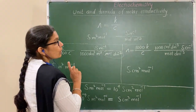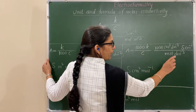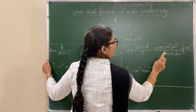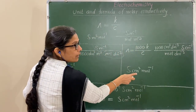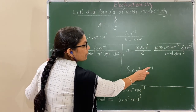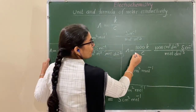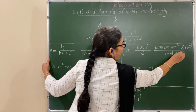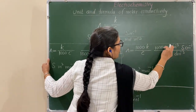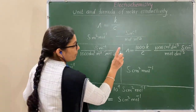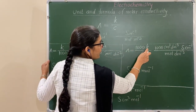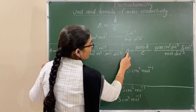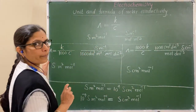Now suppose concentration is given in mole per dm cube but conductivity is given in siemen per centimeter. If you require lambda in siemen centimeter square per mole, then use this formula. You know that 1000 dm cube equals 1 meter cube, so these terms cancel and the conversion gives this result. Remember: when you use this formula, conductivity is in siemen per centimeter, concentration is in mole per dm cube, and molar conductivity is obtained in siemen centimeter square per mole.